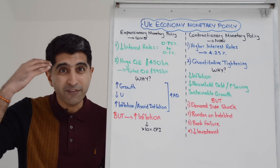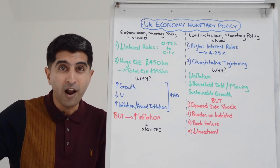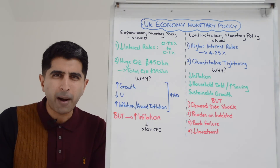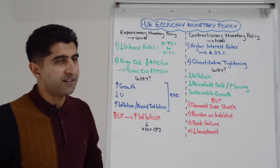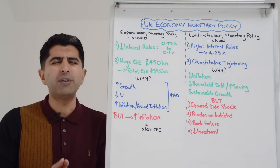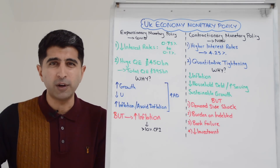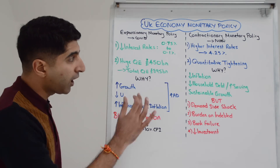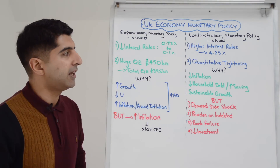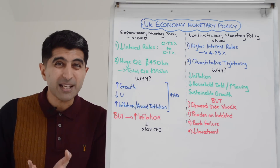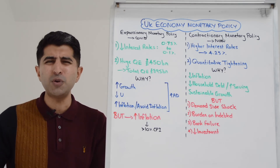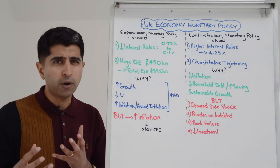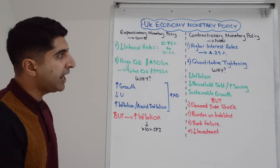Note that interest rates were already very low prior to the COVID crisis, so the cut wasn't that significant. So the Bank of England wanted to go further — they wanted further stimulus. They couldn't use interest rates anymore, so they had to use quantitative easing. They pumped £450 billion worth of new money into the UK economy via QE, bringing the total to £895 billion.